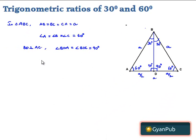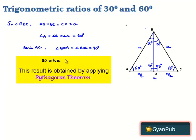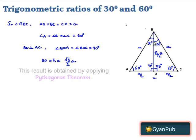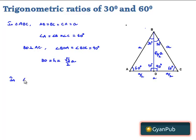And in an equilateral triangle, we also know that the length of height BD is equal to root 3 by 2 times the side, that is nothing but root 3 by 2 times A. Now, let us consider any of these given triangles — that is, in triangle ABD, angle D is equal to 90 degrees. Therefore, let us apply the trigonometric ratios here.